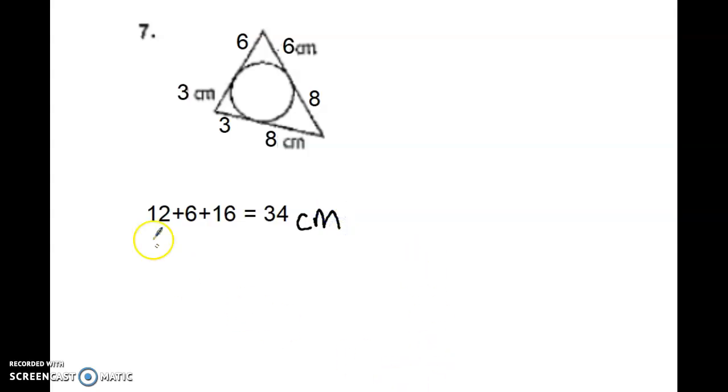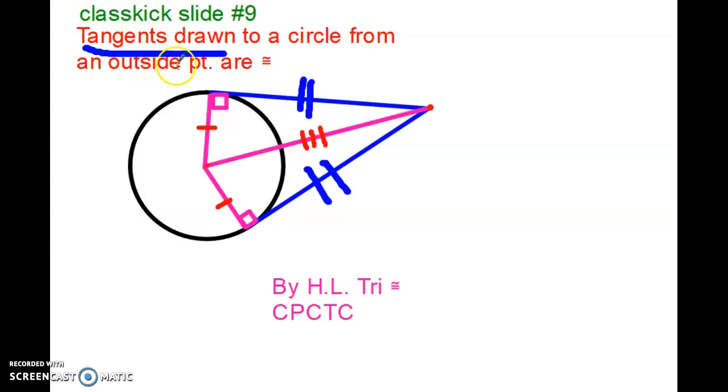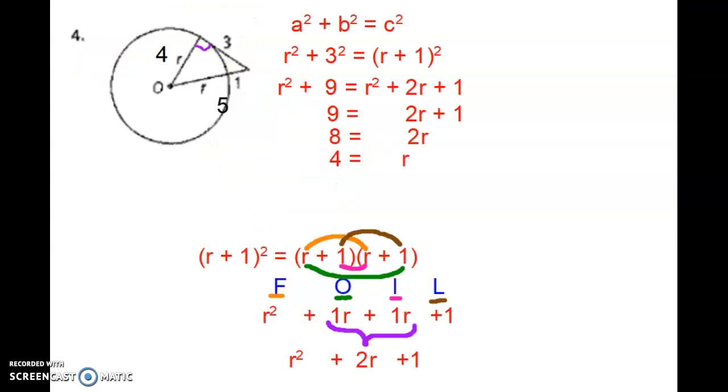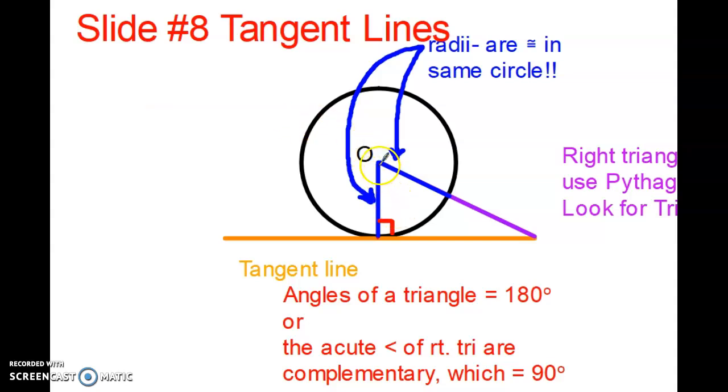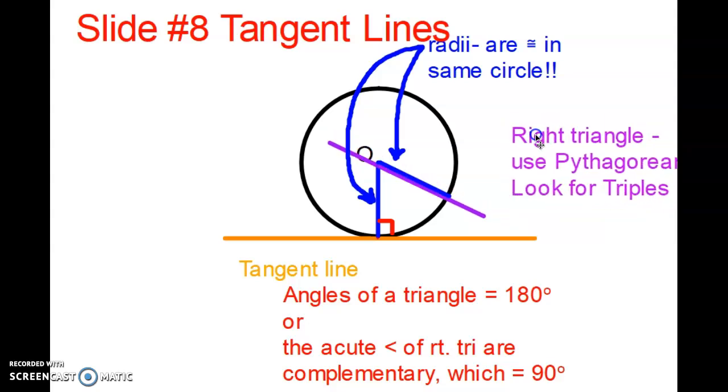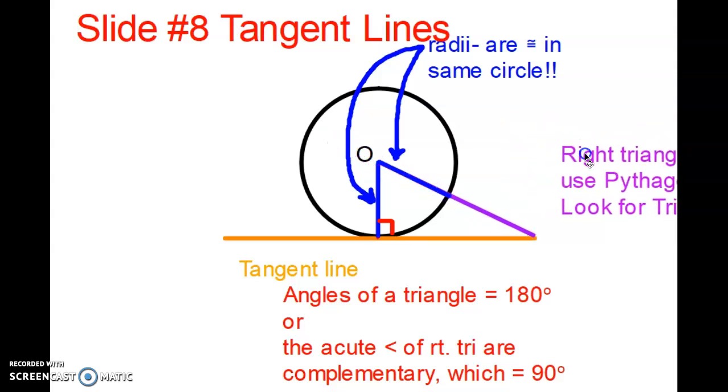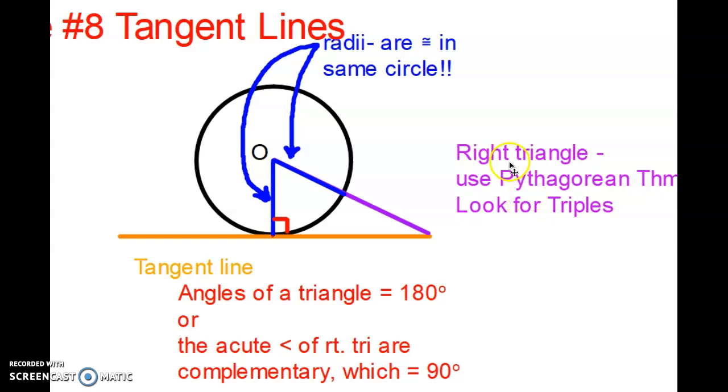So there you go, folks. Please be very aware that tangents, these two blues, are congruent. And when we draw a radius to the point of tangency, we're going to get a box here. And you probably will want to be using the Pythagorean theorem. Let me bring that over for you. Can't really bring it over, but I'll bring the video over. So you want to be looking at right triangles and Pythagorean theorem. Look for triples if they are. All right, folks. There you go.